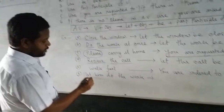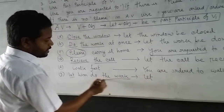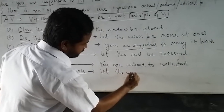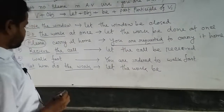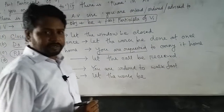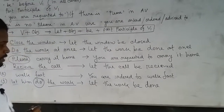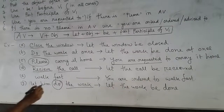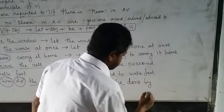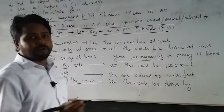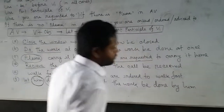The last example is different from the previous five. In this sentence, at the beginning we find 'let'. So first we use 'let', then the object 'the work': 'Let the work'. Then we add 'be', and then the past participle form of the main verb. The verb is 'do' — do, did, done — so we use 'done': 'Let the work be done.' My dear students, here we also have to use 'by', followed by the objective form of the subject.